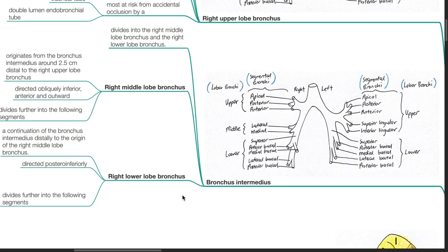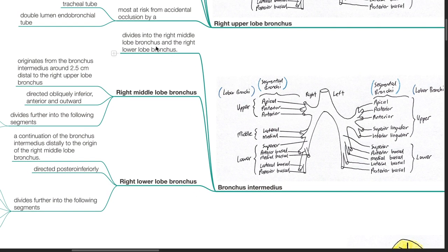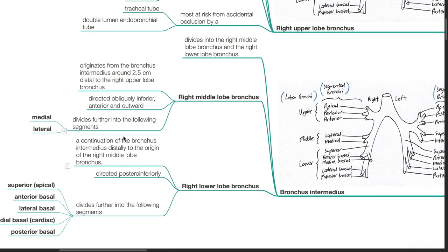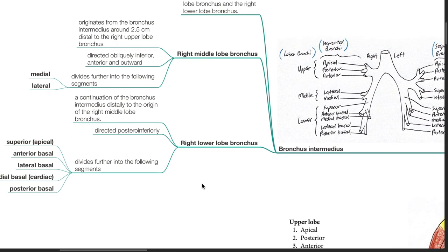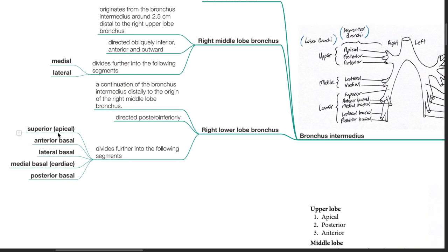Bronchus intermedius divides into the right middle lobe bronchus and the right lower lobe bronchus. The right middle lobe bronchus originates from the bronchus intermedius around 2.5 cm distal to the right upper lobe bronchus, directed obliquely inferior-anteriorly and outward, dividing into the medial and lateral segments. The right lower lobe bronchus is a continuation of the bronchus intermedius and divides into the superior (apical), anterior basal, lateral basal, medial basal (cardiac), and posterior basal segments.